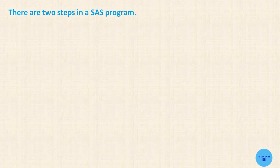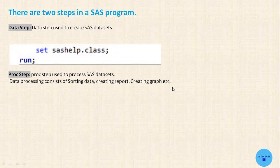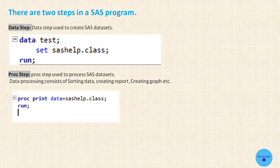Next is steps in a SAS program. In SAS, we have two steps: data step and proc step. The data step is used to create SAS data sets and the proc step is used to process SAS data sets. Data processing consists of sorting the data, creating reports, creating graphs, etc. This is an example of a SAS data step and this is an example of a SAS proc step. Any SAS program consists of one or more data or proc steps, and any step is a combination of multiple SAS statements.